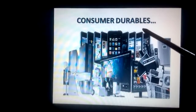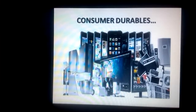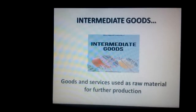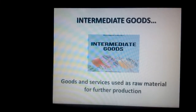Consumer durables are goods that have a relatively long life compared to articles like food and clothing. They do not need frequent repairs and replacement of parts, and are not extinguished by immediate or short-period consumption. The next type is intermediate goods. These are goods and services used as raw material for further production or for resale in the same year. They do not fulfill human needs directly. Examples include steel sheets used for making automobiles and copper used for making utensils.